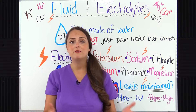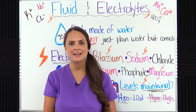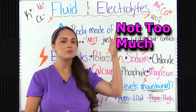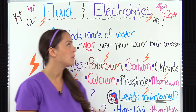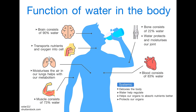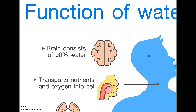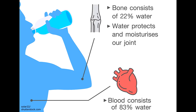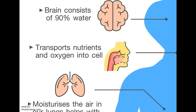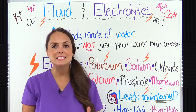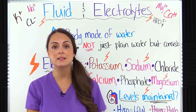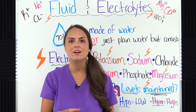We need a proper balance of fluid and electrolytes in our body in order to maintain life — not too much or too little, we need a specific range. In fact, 70% of our body is actually made up of water. Water is found in our brain, muscles, and bones. It helps transport nutrients and oxygen into the cell. Our blood consists of 83% water, but this isn't just plain water — it consists of many things, including electrolytes.